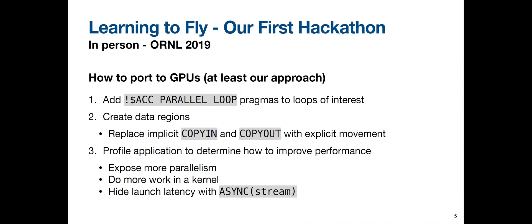From profiling we pulled out three key lessons. First, expose more parallelism — doing more work in a kernel is better, especially if it reduces the amount of memory loaded from device memory. Second, hide launch latency with asynchronous launches. Third, we investigated using streams to get parallel execution between different kernels, as long as our occupancy wasn't too high.